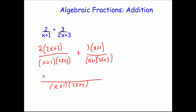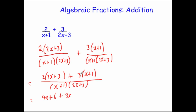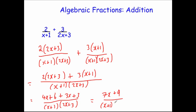Now we put everything over the single denominator (x + 1)(2x + 3), with the numerator being 2(2x + 3) plus 3(x + 1). Expanding: 2 times 2x is 4x, 2 times 3 is 6, then 3 times x is 3x, and 3 times 1 is 3, all over (x + 1)(2x + 3). Simplifying the numerator: 4x plus 3x is 7x, and 6 plus 3 is 9. So the answer is (7x + 9) over (x + 1)(2x + 3). The numerator can't be factorised, so we leave it like that.